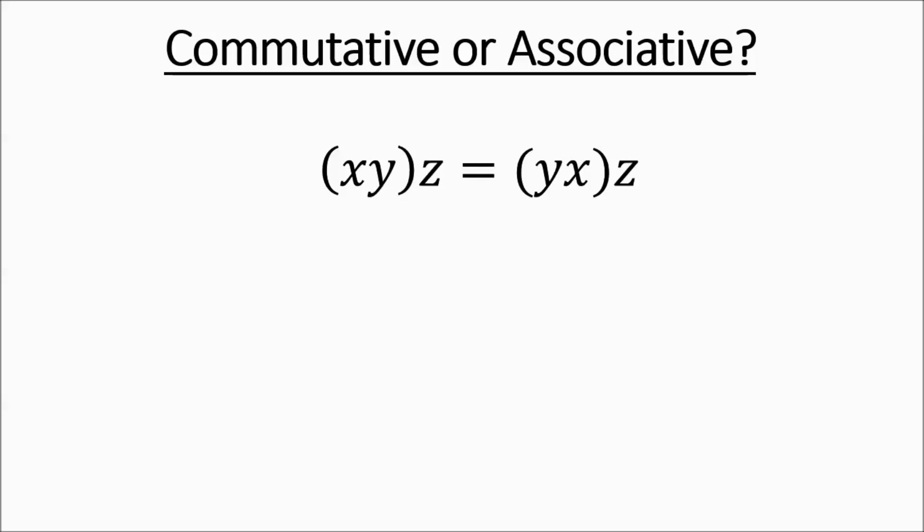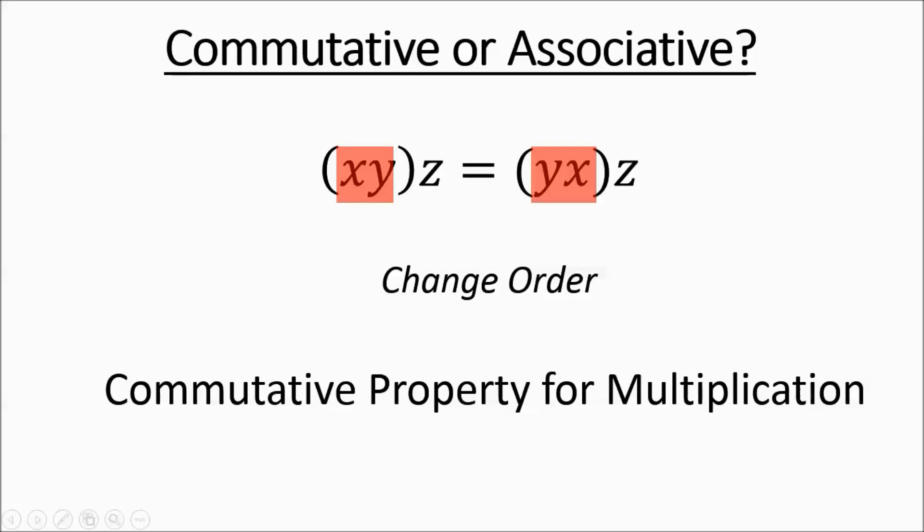We have a bunch of variables again. Over here we have XYZ. Now we have YZX. So the Z's not being regrouped with anybody. It can't be associative. And we have XY changing to YX. That's going to have to be a change of order, which is going to be commutative property for multiplying.